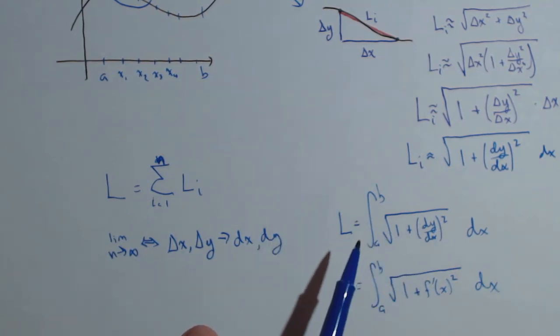So, now you've seen the derivation of the formula. Finding arc length from this point on is just going to be applying the formula.